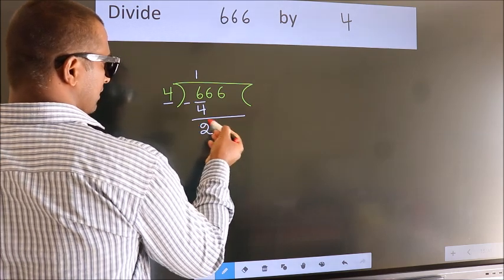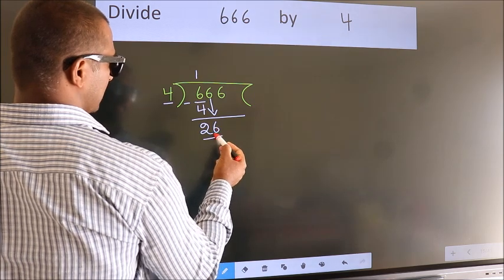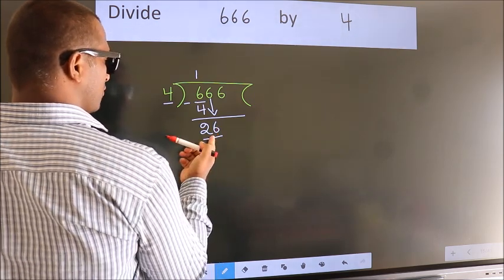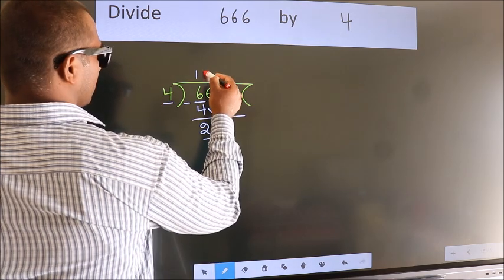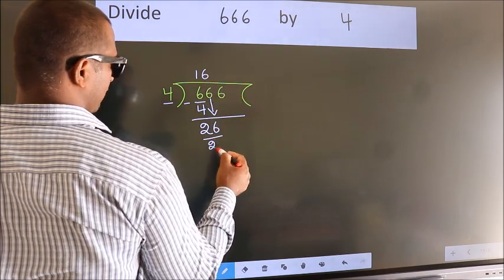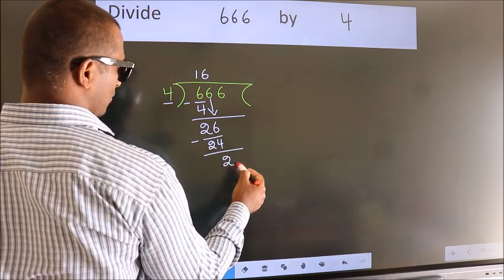After this, bring down the beside number. So 6 down. So 26. A number close to 26 in the 4 table is 4 times 6 is 24. Now we subtract. We get 2.